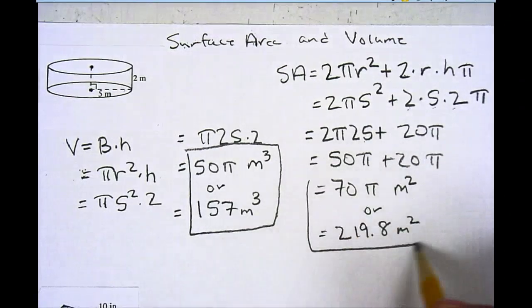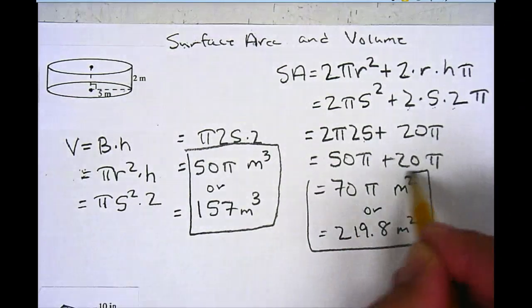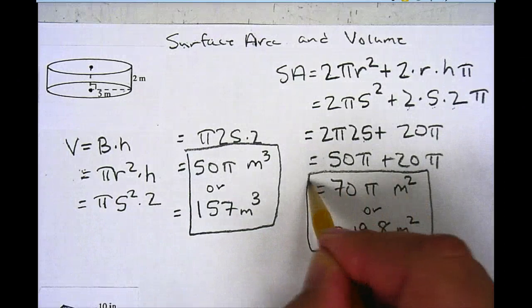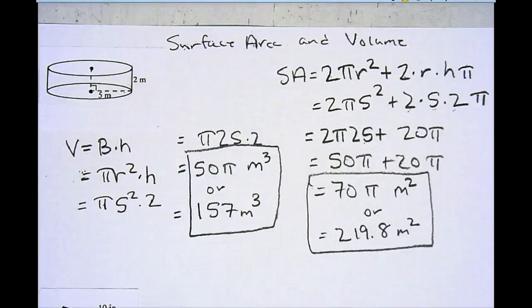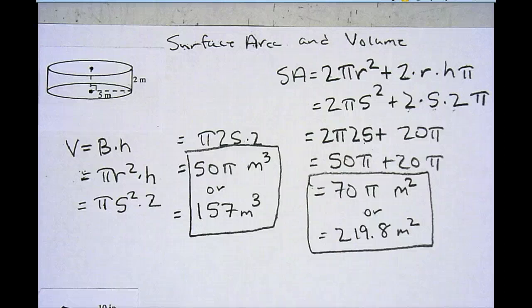Since surface area is how many squares it takes to cover a cylinder, I use square units — my units squared. And that is how I find the surface area and volume of a cylinder.